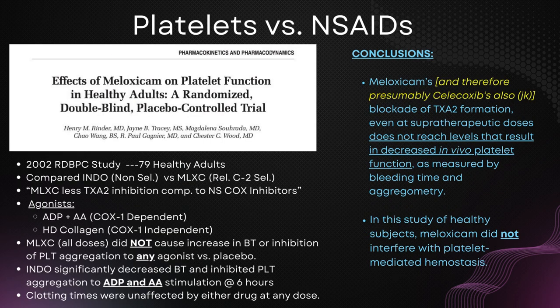Another study discusses how relatively COX-2 selective NSAIDs may have less of an inhibitory response on COX-1 independent platelet aggregation. COX-1 independent platelet aggregation is just another way of saying collagen-mediated aggregation — remember those graphs in the last slide. So maybe there's something different about these COX-2 specific drugs.